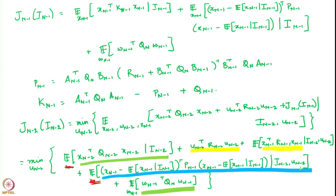The question mark was about the blue term. We were not sure if the blue term is dependent on u_{n-2}. We concluded that the blue term actually has this error x_{n-1} minus the conditional expectation of x_{n-1} given i_{n-1}, and this term is actually independent of u_{n-2}. As a consequence, the entire blue term can be made into a green term because it also does not depend on u_{n-2}.